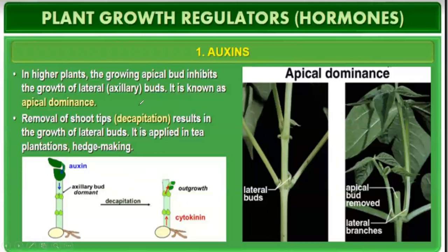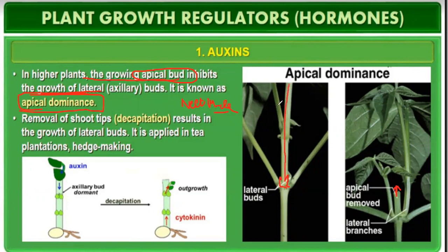Auxins in higher plants: a growing apical bud inhibits the growth of lateral buds, and this is known as apical dominance. Only the apical buds get dominated, whereas the growth of the lateral buds is inhibited. As a result, lengthening of the plant takes place, and that phenomenon is referred to as apical dominance.